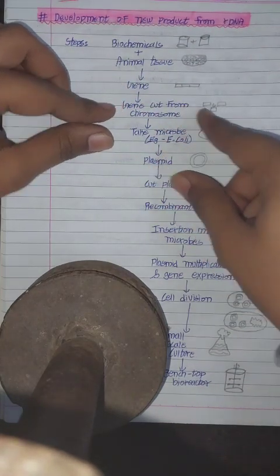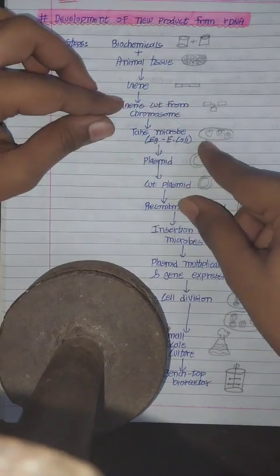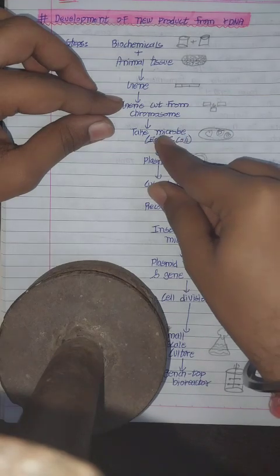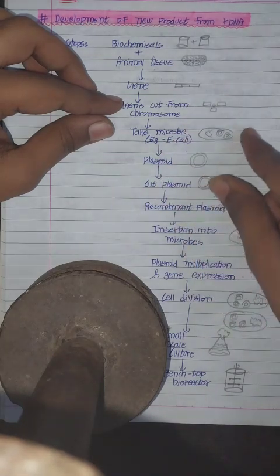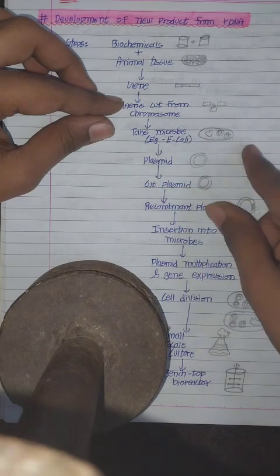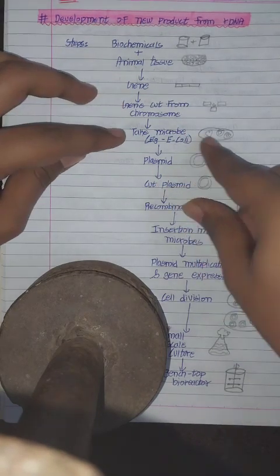Then the gene is cut. From the chromosome we cut this gene. Then we take a microbial culture, mainly E. coli. E. coli is mostly used in these microbial cultures commercially.